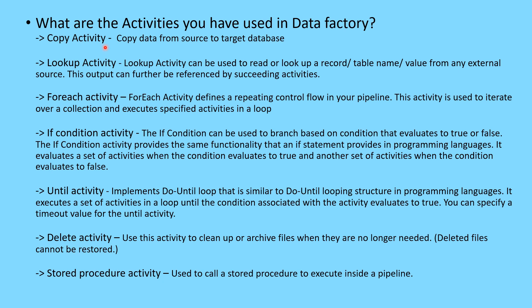The ForEach activity defines a repeating control flow. It is similar to a for-each loop in programming — you can iterate over given parameters. You provide the input parameters and a set of activities will be executed as a loop. For example, if you have 10 files that need to be deleted, you can pass the file names as parameters to ForEach, and inside it you place a Delete activity to delete those files.